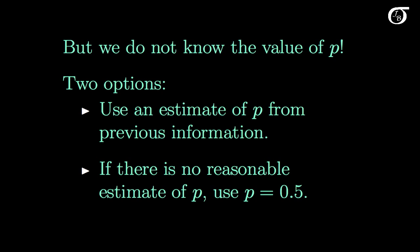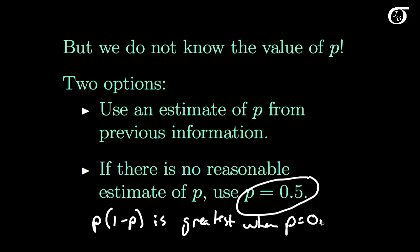But if you have no reasonable estimate of P, we're going to choose P is equal to 0.5. Why are we choosing that? Well, P times 1 minus P is greatest, is largest, is as large as it can possibly be when P is equal to 0.5. And you can show that with a little trial and error, or a little calculus.